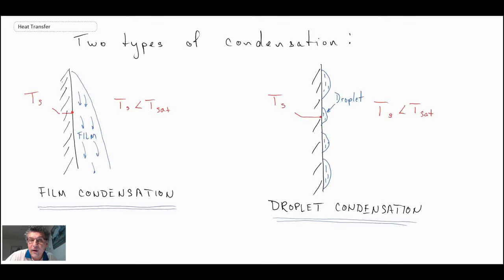You can imagine the heat transfer characteristics are very different depending upon whether we have film condensation or droplet condensation. For the most part, what we're going to be doing in the next few lectures is looking at film condensation, just because the heat transfer for film condensation is actually worse and consequently it's a more conservative estimate.